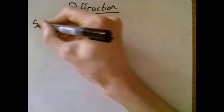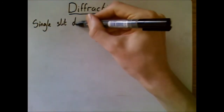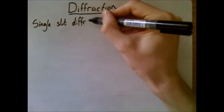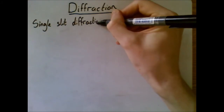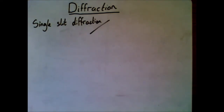Let's look then at single slit diffraction. We talked in the last video about double slits and Young's double slit experiment, and how the light from the two slits interferes to give the fringe pattern. But if you shine light just through a single slit, you don't just see a single blob of light on your screen — you will in fact also see a kind of fringe pattern, and the reason for that is diffraction.